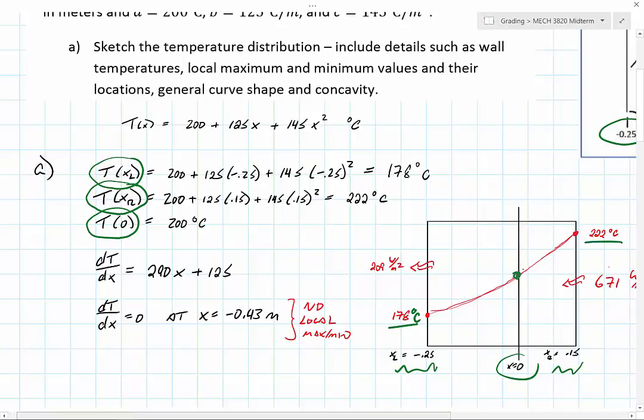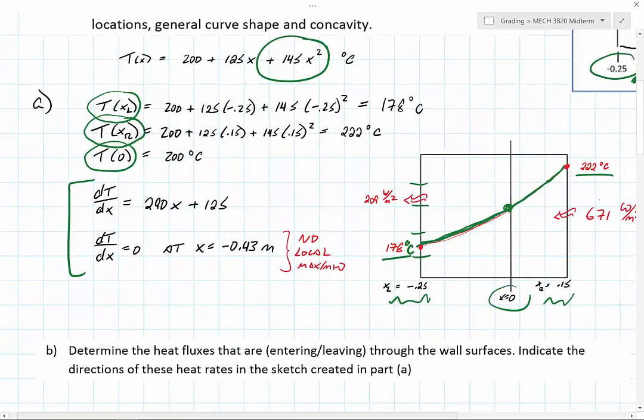The curve has to be concave up because you have a plus x squared. If you're not sure if there's a local max or min, you take your derivative and set it equal to zero. We find that it's not zero anywhere within the wall—it's at negative 0.43, so there's no local maximum or minimum.